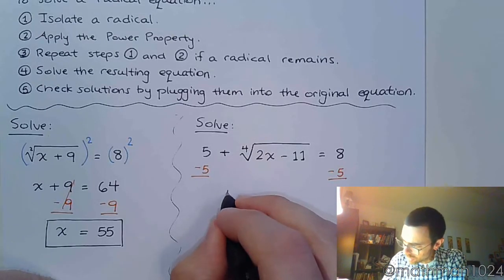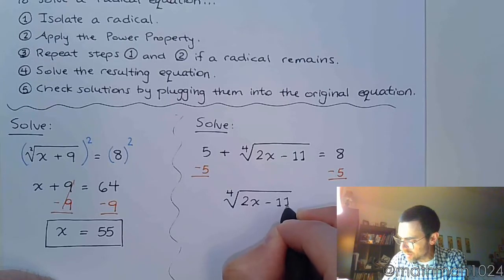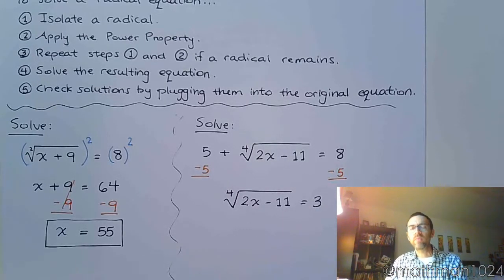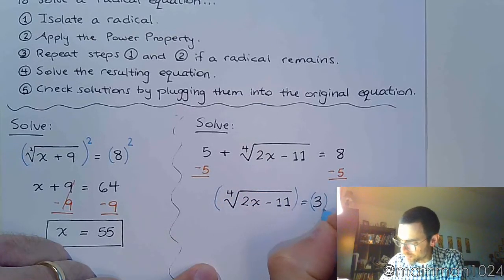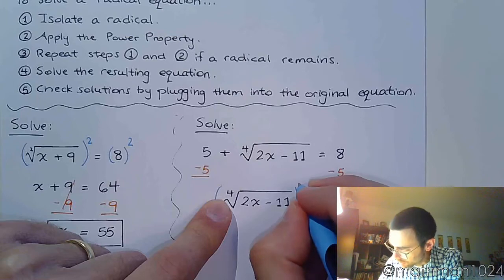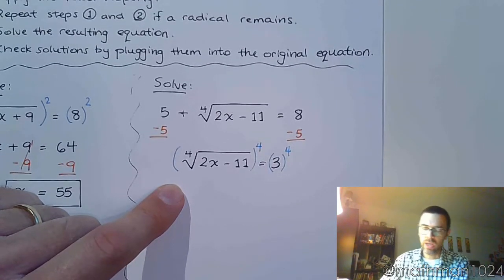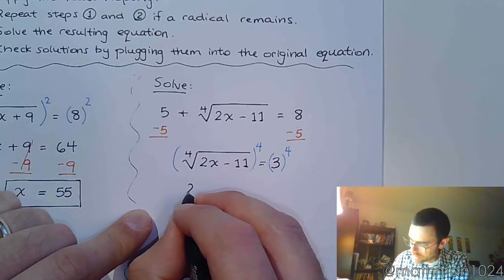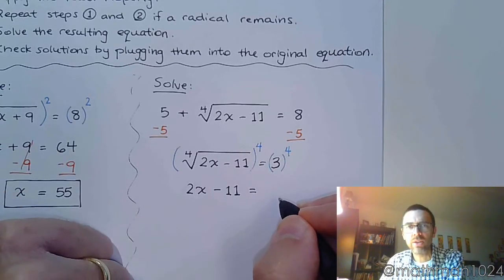So we have the fourth root of 2x - 11 = 3. The next order of business is to get rid of the radical. Remember we don't even think about the power property until the radical is by itself. Now we want to raise both sides of the equation to a power that's going to undo the fourth root. Well that fourth root, that index right there tells you you need to raise both sides to the fourth power. When I apply the power 4 to the fourth root, I just get the expression on the inside - just get that radicand 2x - 11. And on the right side, 3 to the fourth power gives me 81.